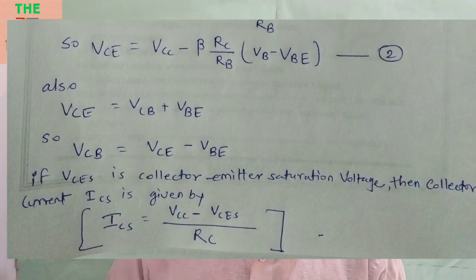Also, VCE is equal to VCB plus VBE. Here you can see VCE is equal to VCB plus VBE, both the summation of collector-base voltage and emitter-base voltage.